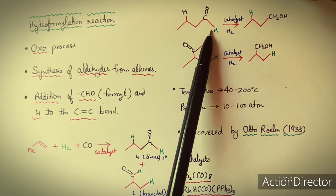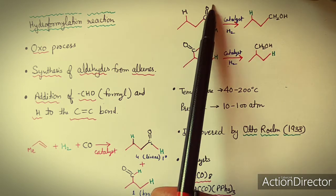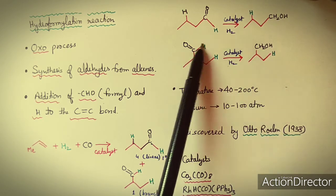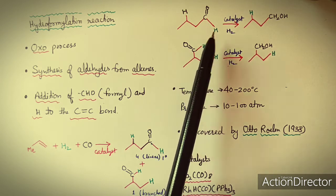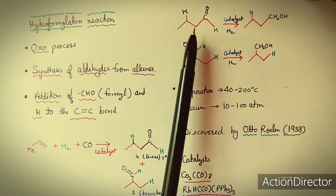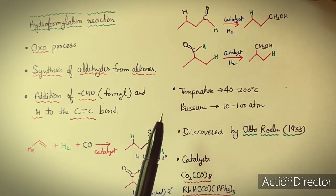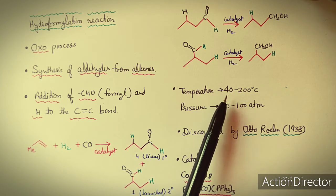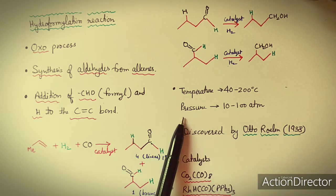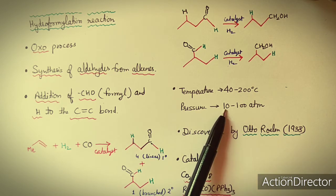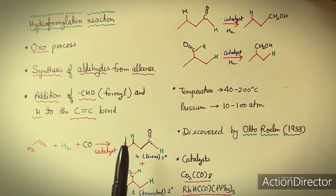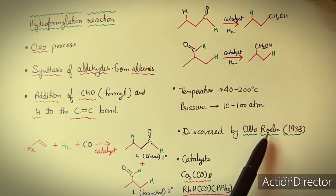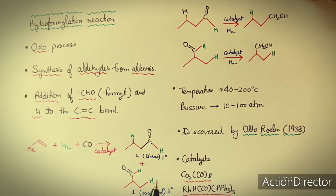In the presence of other catalysts, catalytic hydrogenation can convert the aldehyde group to an alcohol. So these aldehydes are useful in the preparation of alcohols as well. Generally in hydroformylation, temperature is set to 40–200°C and pressure is 10–180 atm. This process was discovered by Otto Lund in 1938.